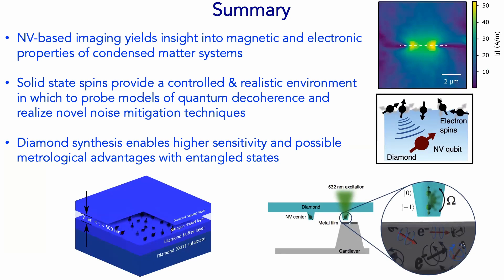Any questions? When you got that factor of 3 enhancement of coherence time by driving that bath, was that a factor of 3 beyond what you would get by optimizing the dynamical decoupling sequence in the absence of driving the bath? No, but if we were to combine this driving with extra dynamical decoupling directly to the NV center, we can do even better. Those two are definitely complementary and can be used together.